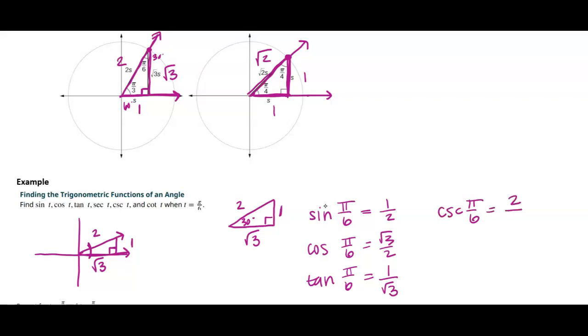Opposite, hypotenuse over adjacent, and adjacent over opposite. So those are the six.